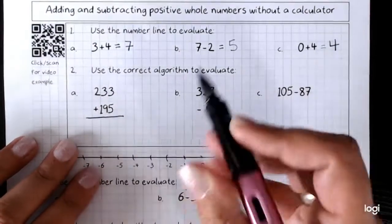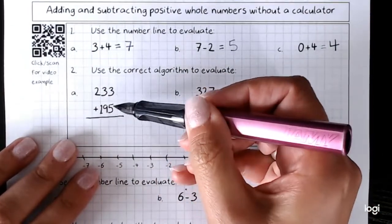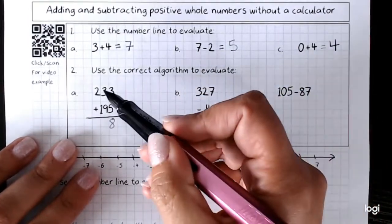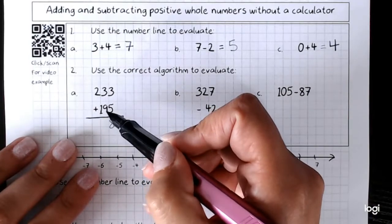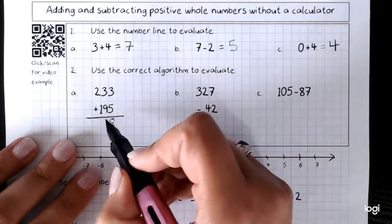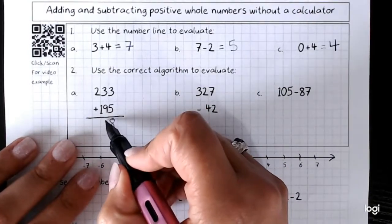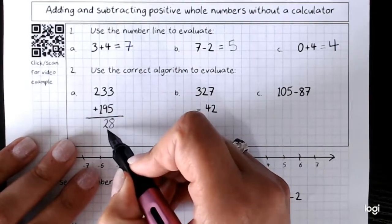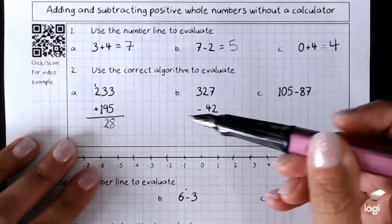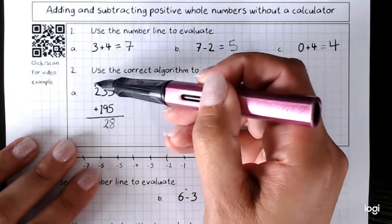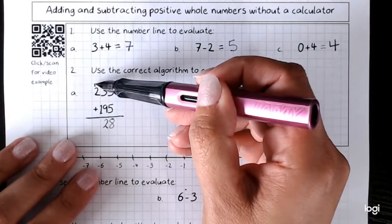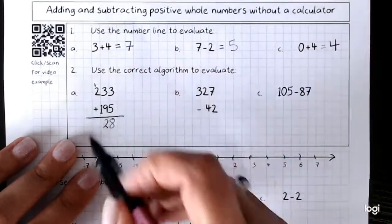Remember we put a line underneath. 3 plus 5 is 8. Put it underneath. 3 plus 9. Now that's 12. We can't put 12 in here, so you'll remember when we've got two digits, we put the units here, the 2, and we carry the 1 so we'll go into the next column. That, of course, does not make this a 12. That's an extra 1. So this hundreds column is 1 plus 2 plus 1, which is 4.